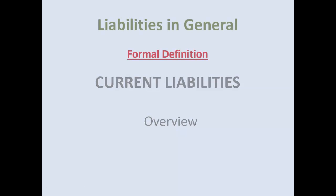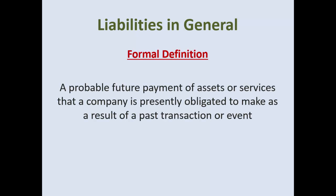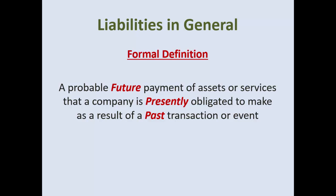To review current liabilities, what is the formal definition according to FASB? It's a probable future payment of an asset or service that a company is presently obligated to make as a result of a past transaction or event. The easy way to remember this is you owe something in the future presently because of a past transaction — future, present, and past.